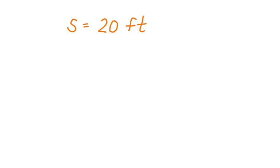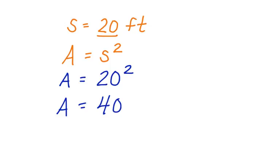We can check our work by substituting the side length back into the formula. Area is equal to side squared. That's our formula. If we look for the area, we substitute 20 in for the side squared. The area equals 400 square feet. Our answer checks out.